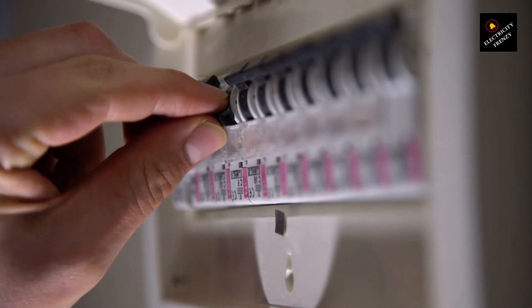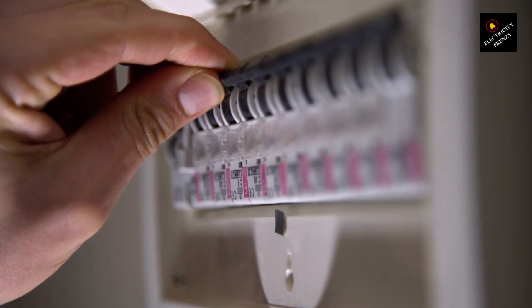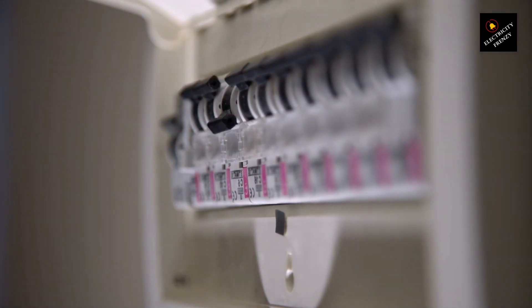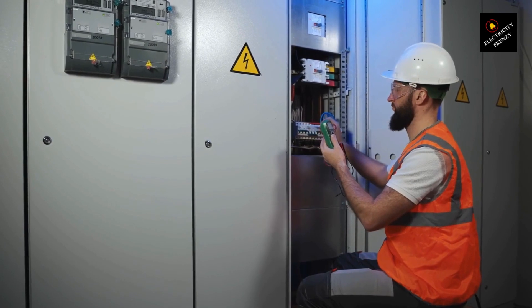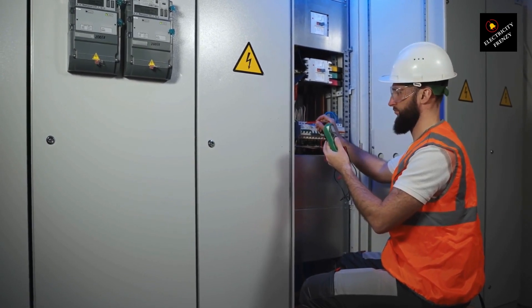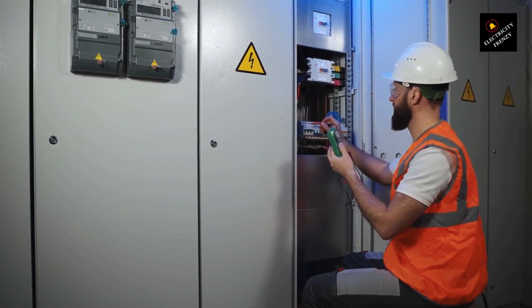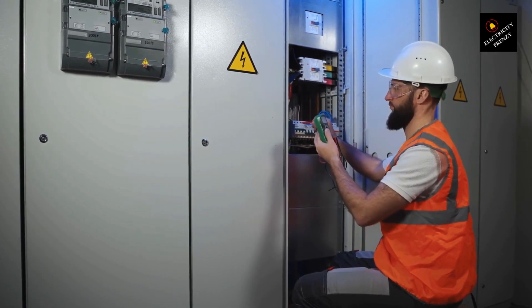While a faulty dryer can indeed cause the circuit breaker to trip, it's not the only possible cause. There are various factors that can lead to a circuit breaker tripping when the dryer is in use. Let's delve deeper into each potential cause of your dryer tripping the circuit breaker.